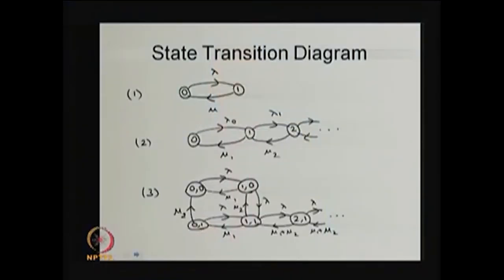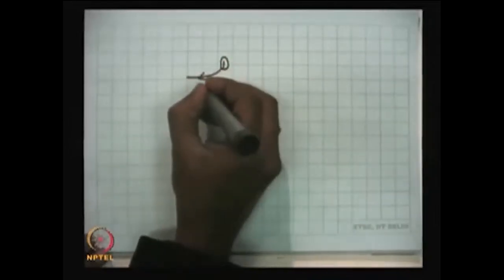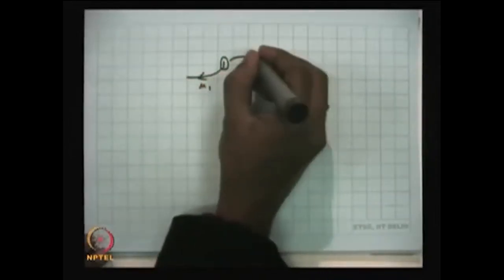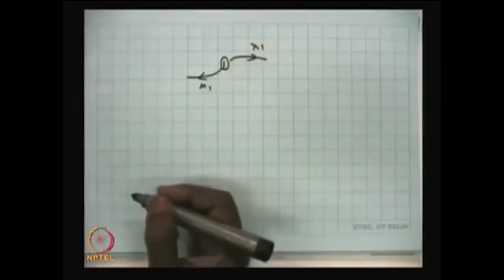In state 1, the system can spend an exponential amount of time. The time spent in state 1 before moving into state 2 is exponentially distributed with parameter lambda-1. Similarly, the time spent in state 1 before moving into state 0 is exponentially distributed with parameter mu-1. So from state 1 there are two competing exponential clocks: one with parameter mu-1 (moving to state 0) and one with parameter lambda-1 (moving to state 2).